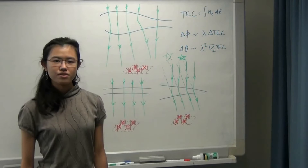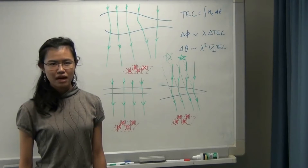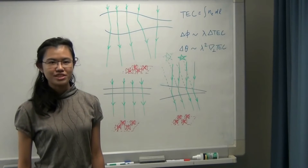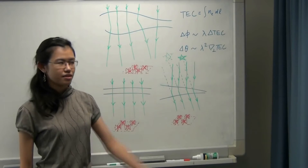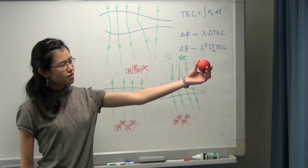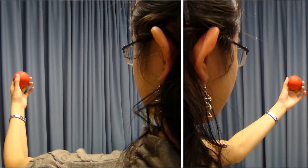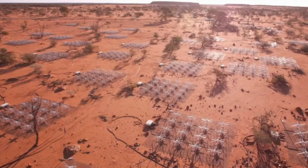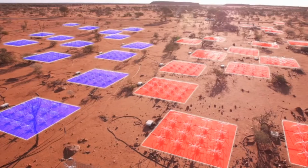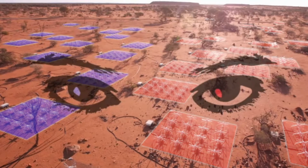But that's not all. The MWA also has the power to see in 3D. When we look at an object, our brain combines the images from our two eyes, allowing us to judge how far away it is. So by analysing the signals recorded by MWA tiles in the east and separated tiles in the west, we give the MWA the ability to perceive depth.